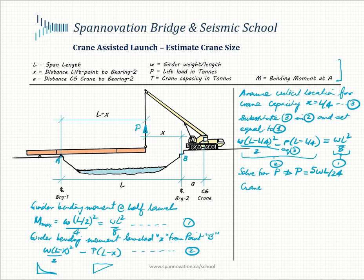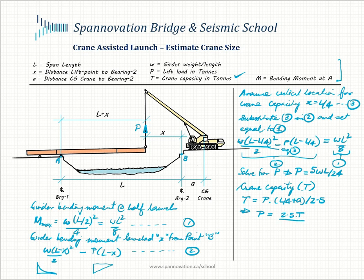If you recollect, we have a rule of thumb formula for crane capacity in the absence of crane charts. Capacity T is equal to the pick load P times the pick radius — which in this case would be x plus a, where x is L over 4 — so L over 4 plus a, this whole thing divided by 2.5. Solving for P from this equation we get P equal to 2.5 times the crane tonnage divided by (L/4 + a). We'll call this equation 4 and this equation 5.